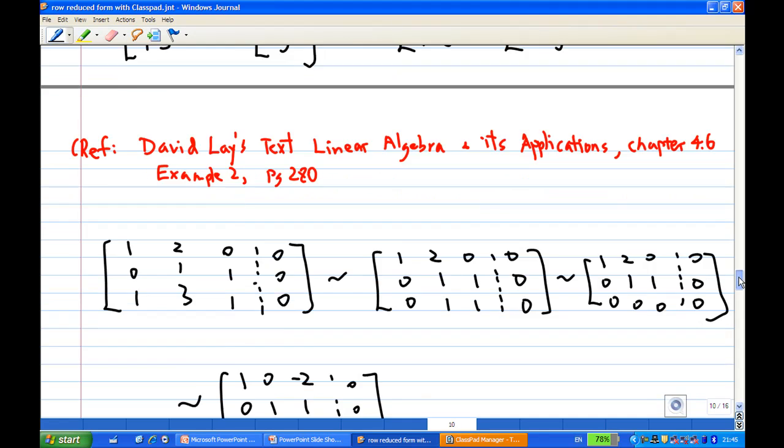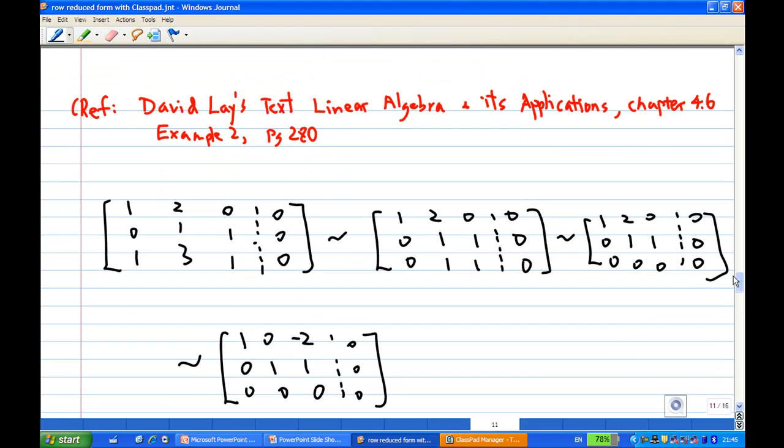Now, from here, let's try to figure out what are the relations between them. Let's go to David Lay's text, Linear Algebra and Its Applications, Chapter 4.6, Example 2, page 280. We have the matrix formed by the columns v1, v2, and v3.